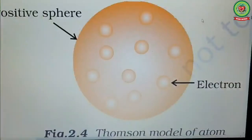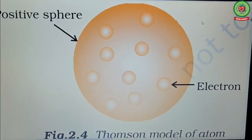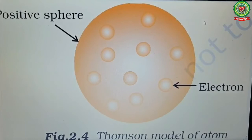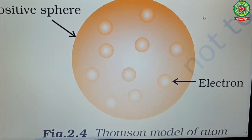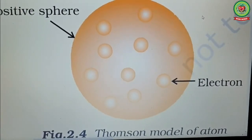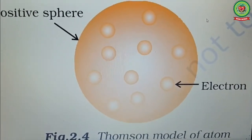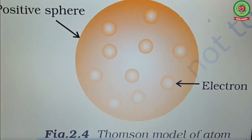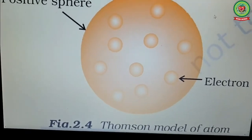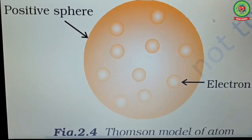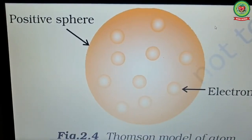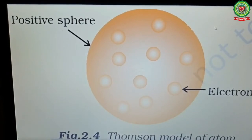Now let's move to topic 2: Thomson's atomic model. This was also known as Thomson's plum pudding model. He proposed that the positive charge is spread over a sphere in which electrons are embedded, to make the atom as a whole neutral. He described it as electrons being like raisins embedded in a positively charged sphere — like a pudding with raisins in it.